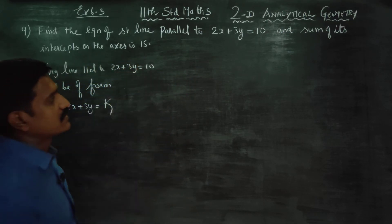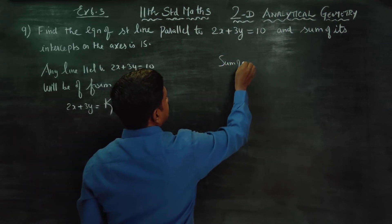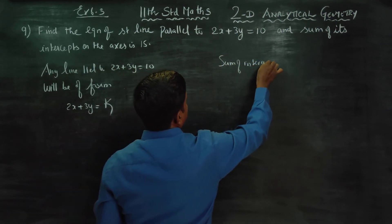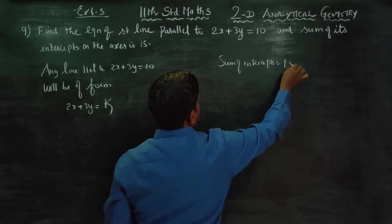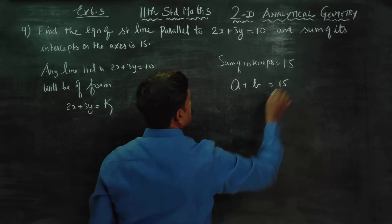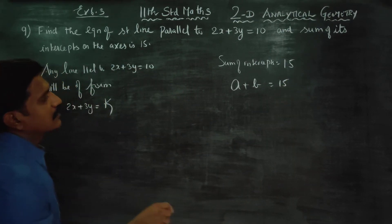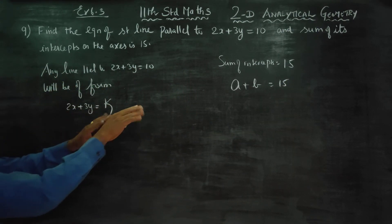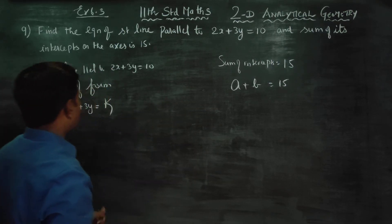The sum of the intercepts is 15. Sum of the intercepts equals 15, that's why we are using intercept form. Sum of intercepts is a plus b equals 15, where a is the x-intercept and b is the y-intercept. This is the key.